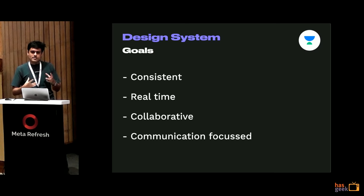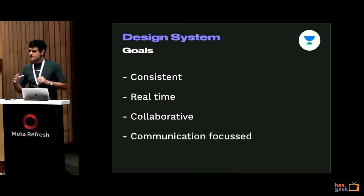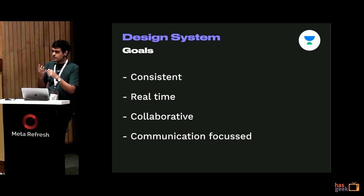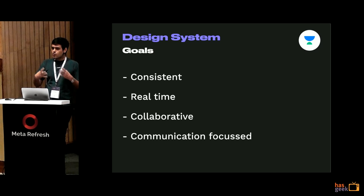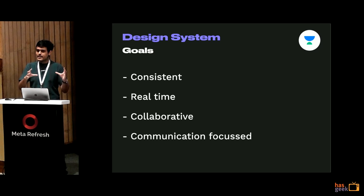The first goal with any design system is consistency. At Unacademy we have four apps — the learner app on iOS and Android, and the educator app also on iOS and Android. One of the things we wanted was to be able to move really fast. We were switching to React Native, starting with one app and planning to switch all four eventually. This was the perfect time for the design team to come up with a new system that ensured consistency moving forward.